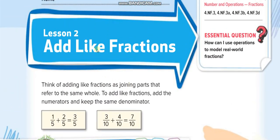Like fractions means when you have the same denominators. These two fractions have the same denominators, so we call them like fractions. When the denominators are not the same, we call them unlike fractions, and then we make the denominators the same before adding. That is a different topic — today in this lesson you will only have like fractions.